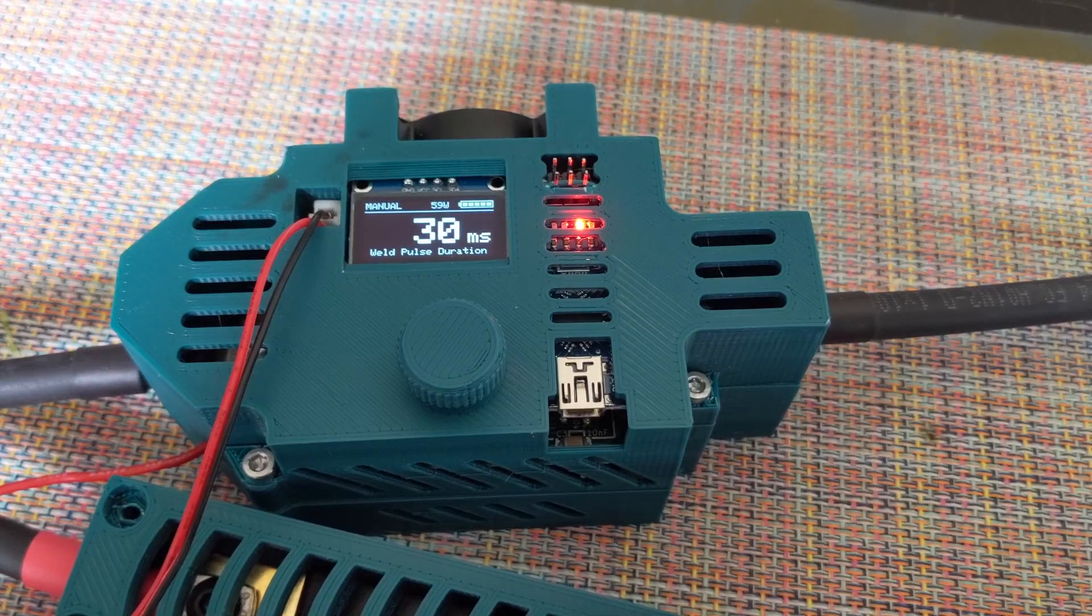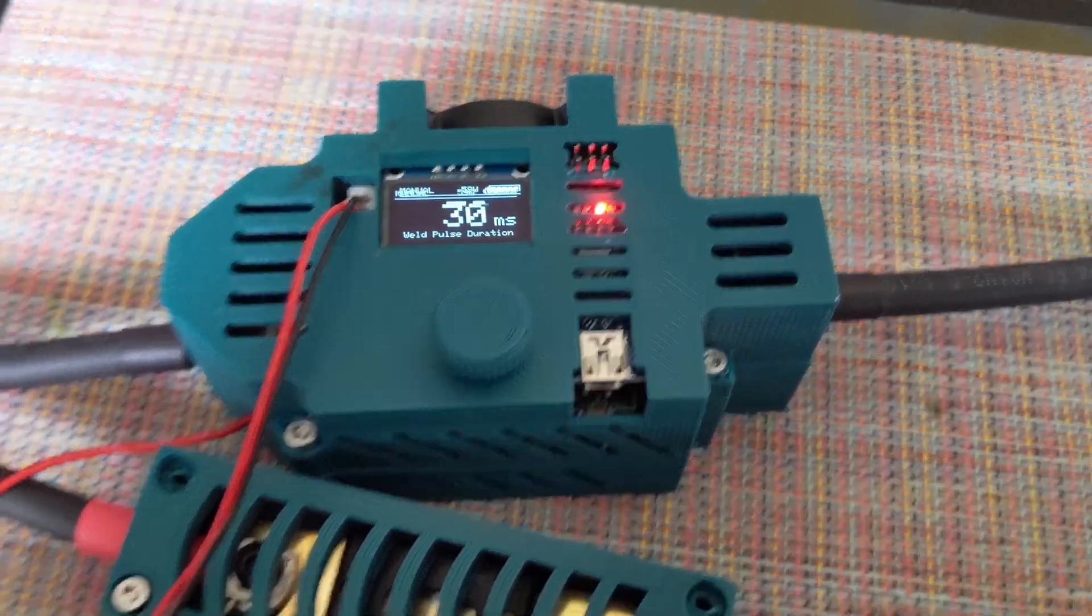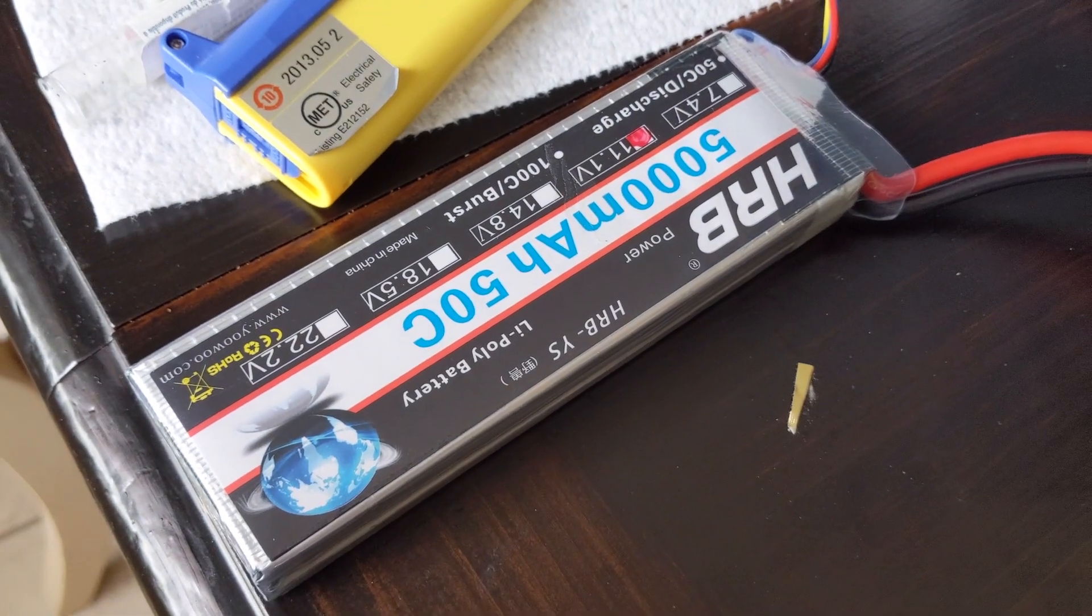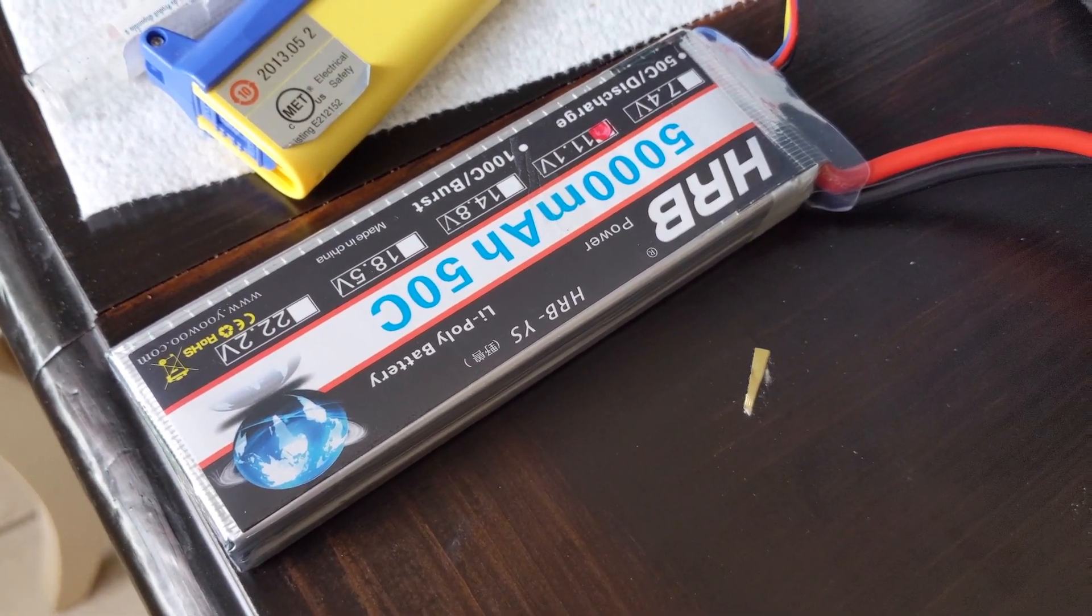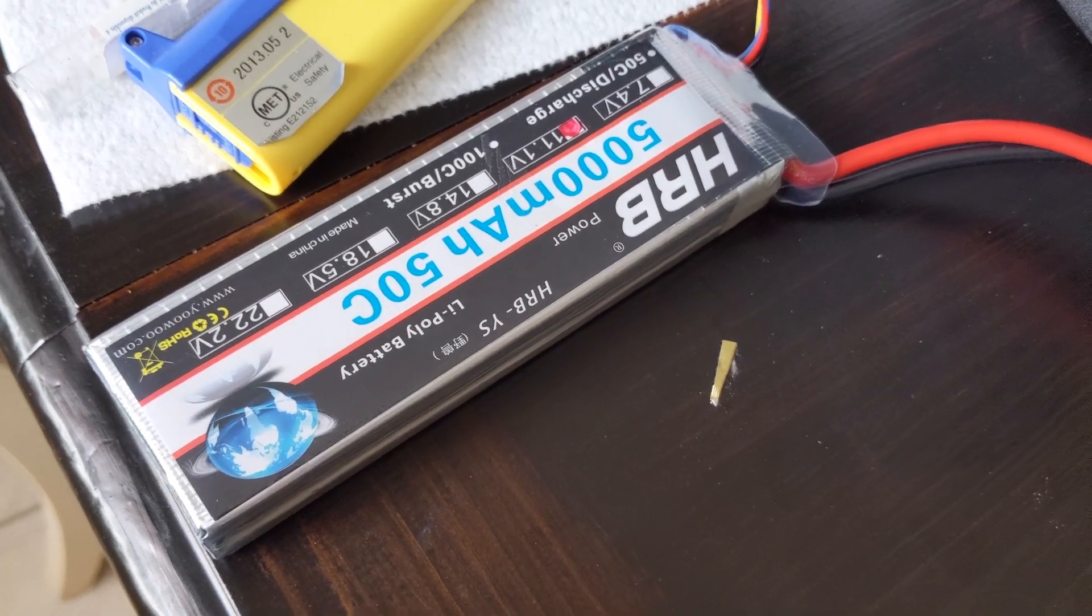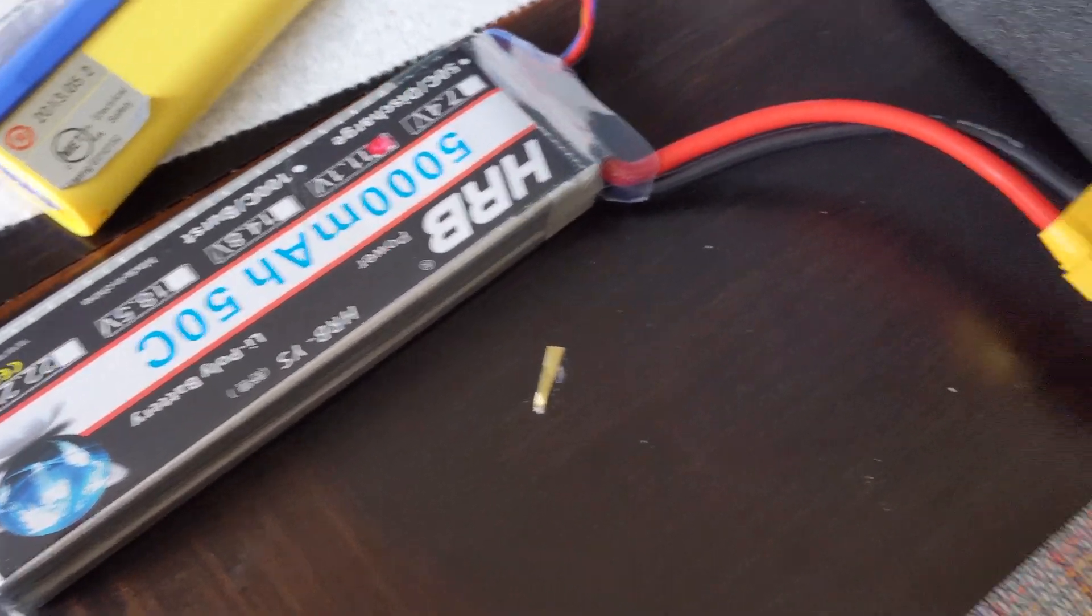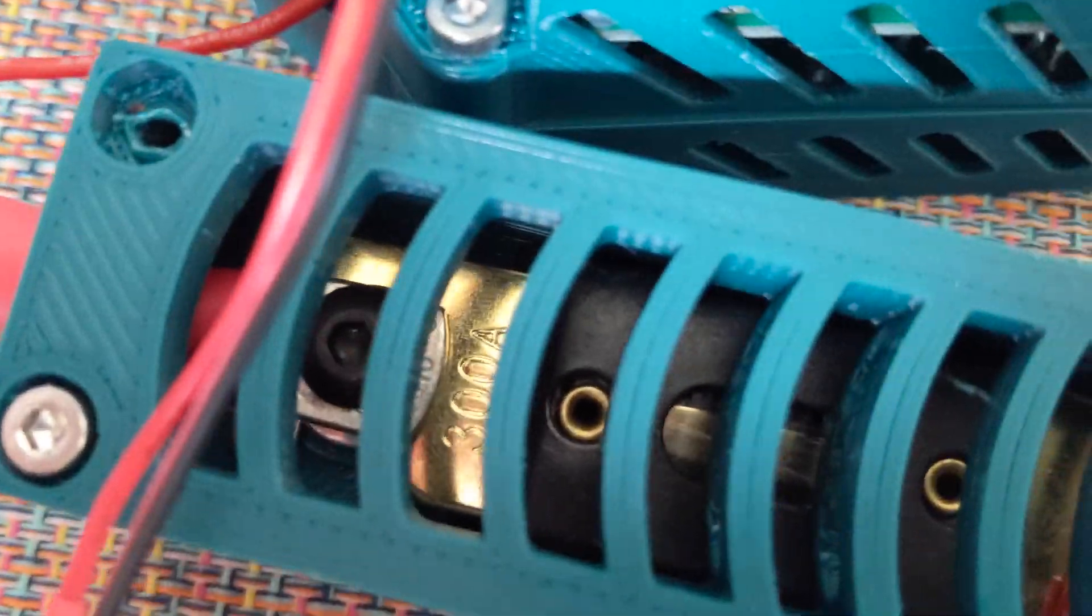What we're going to do here is use the Arduino welder. It's currently connected to a 5,000 milliamp hour 50C battery pack at 11.1 volts, running around 12.6 nominal at full charge. You can see there's a 300 amp fuse in there.